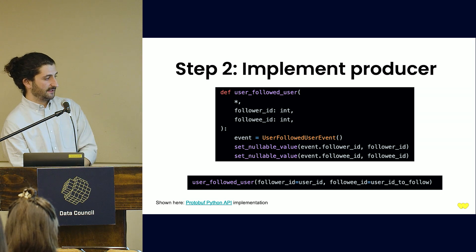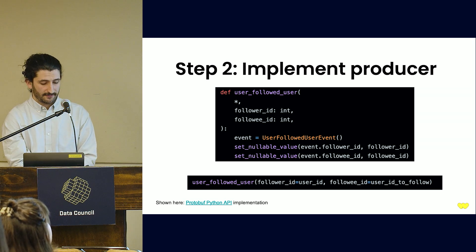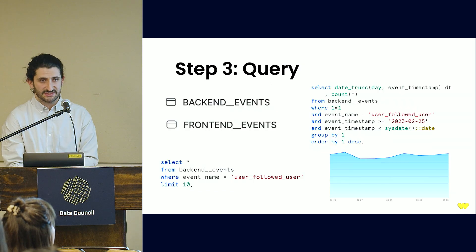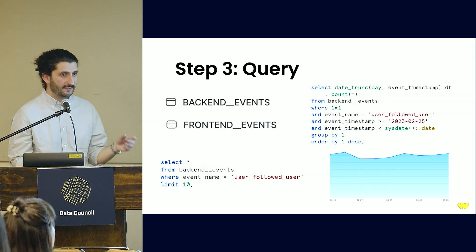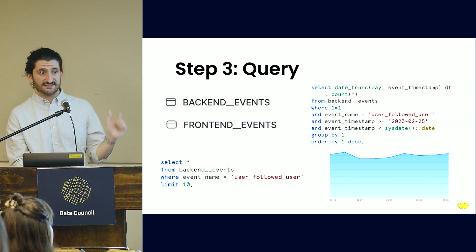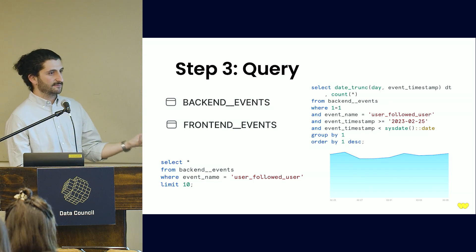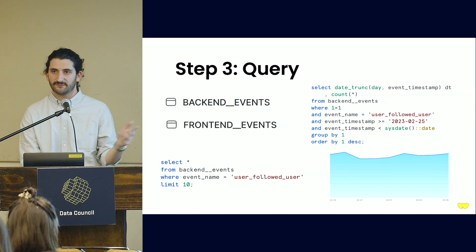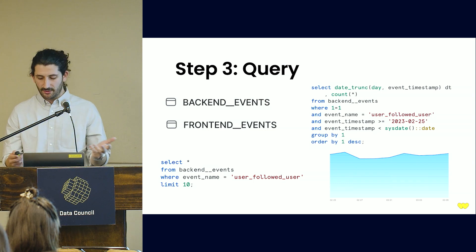Once event producers implement it, they're pretty much done. The exposure layer consolidates everything into just two tables: backend events and frontend events. We've really lowered the amount of context you need to jump into the system and understand what's going on, and there are example queries you can use to get a sense of how this data becomes much easier to work with.